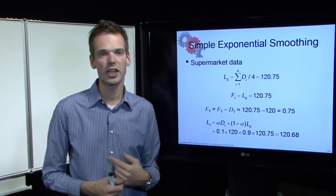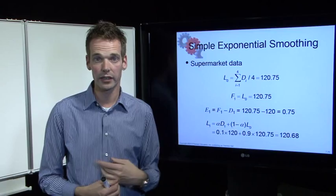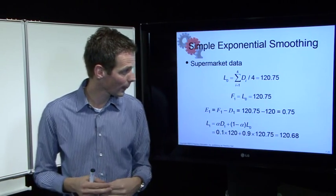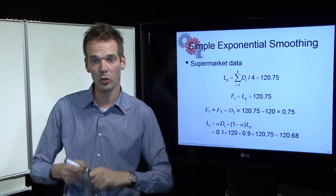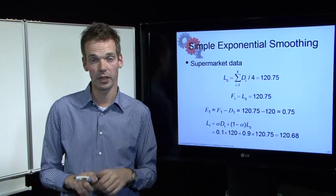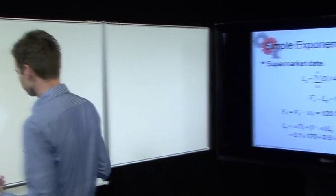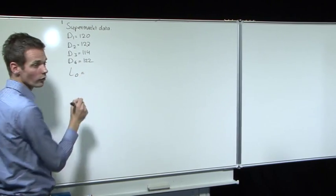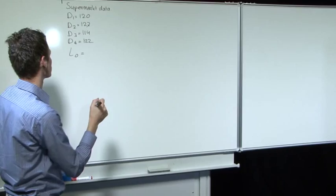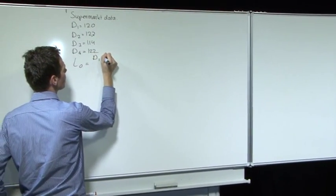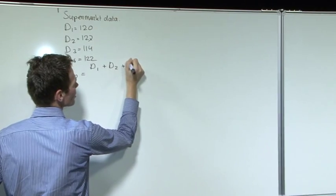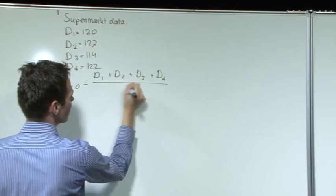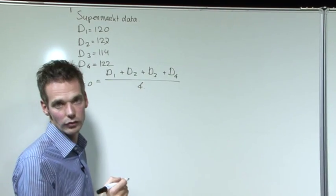Now let's apply this to the supermarket data using simple exponential smoothing. We need to establish the level for period 0. The level for period 0 is D1 plus D2 plus D3 plus D4 divided by 4, as there are 4 different instances.